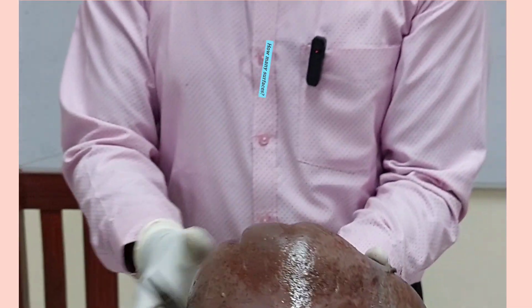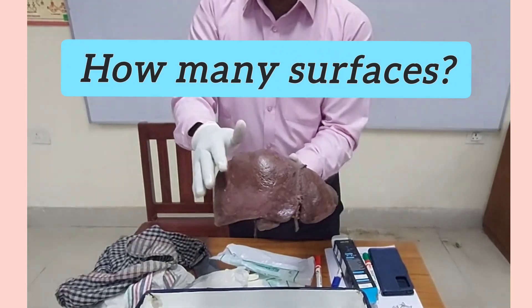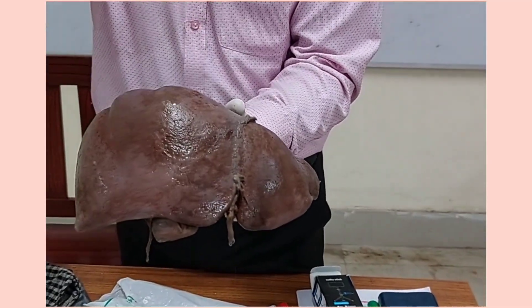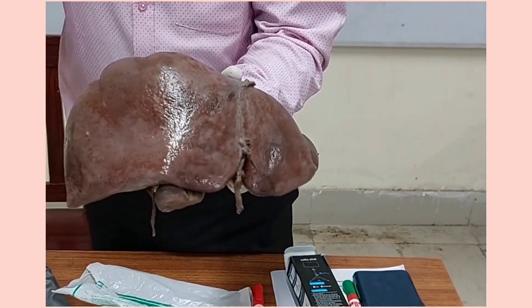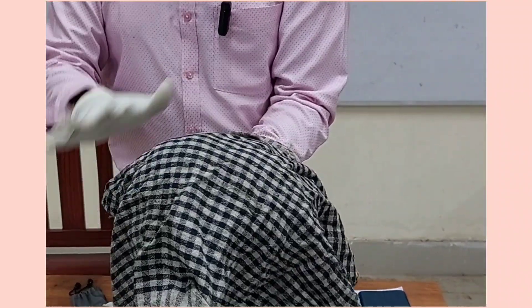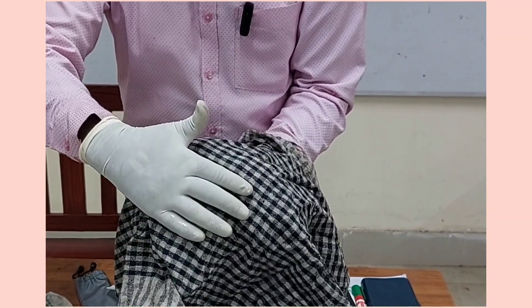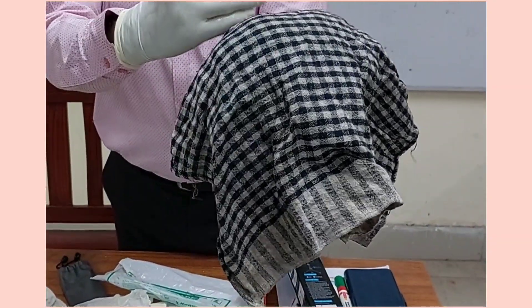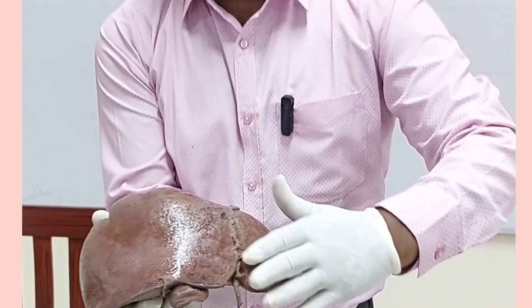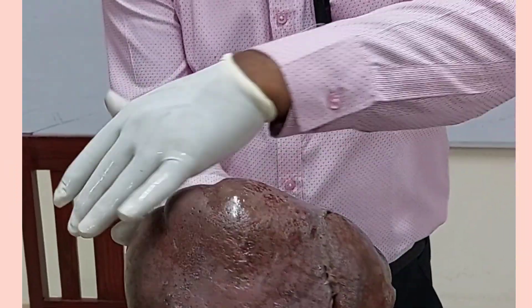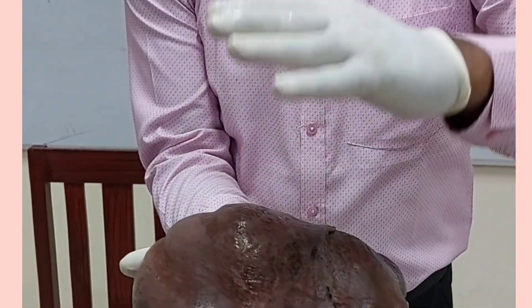Now, how many surfaces are there? On the upper or anterior surface of the liver there is the diaphragm, which separates the abdominal organs from the thoracic organs. If I imagine this is a diaphragm and keep it like this, the diaphragm covers the anterior surface, the superior surface, the right lateral surface, and partly the posterior surface — but it does not cover the inferior surface. So all these surfaces — anterior, superior, right lateral, and posterior — are called the diaphragmatic surface.